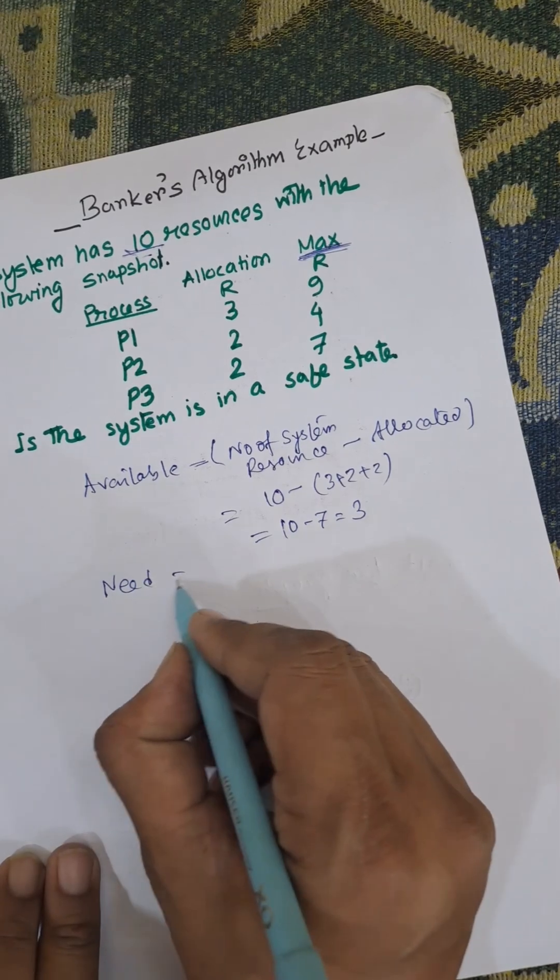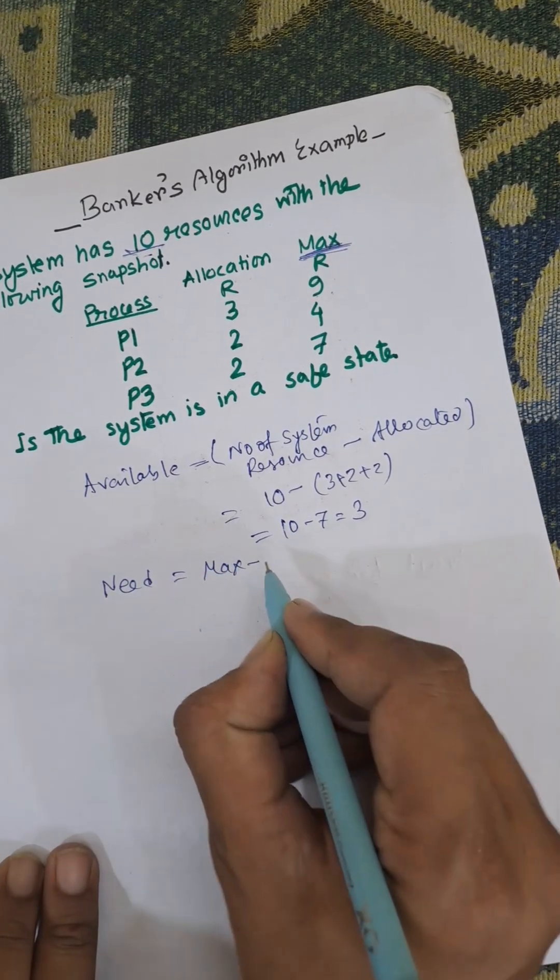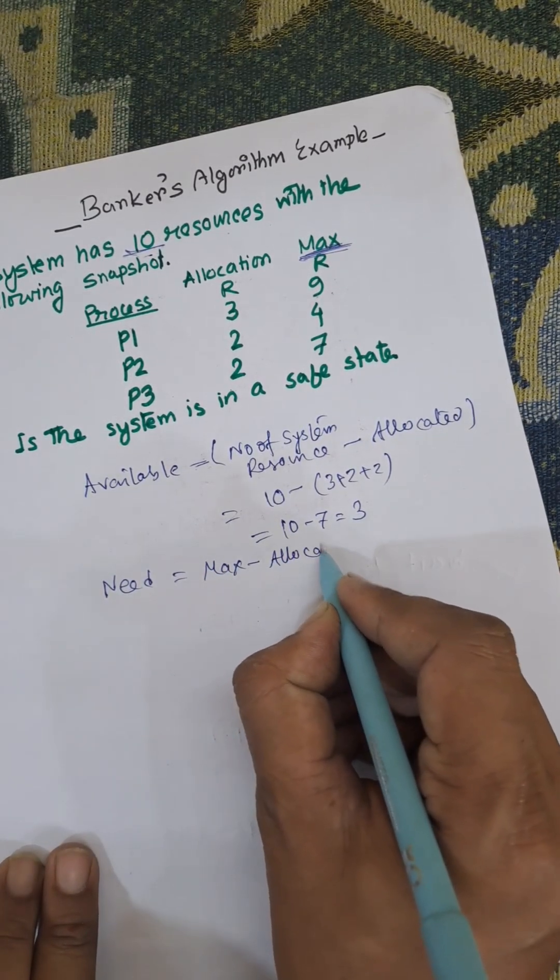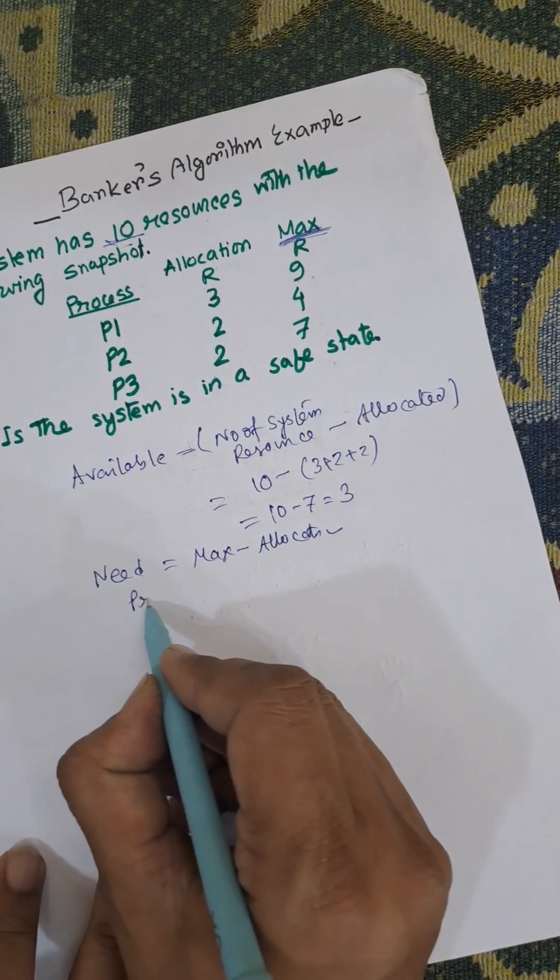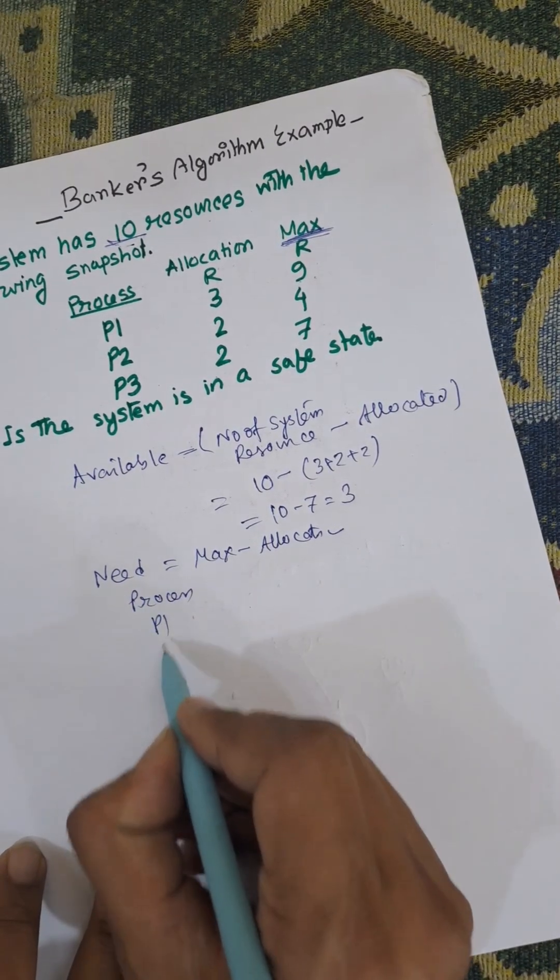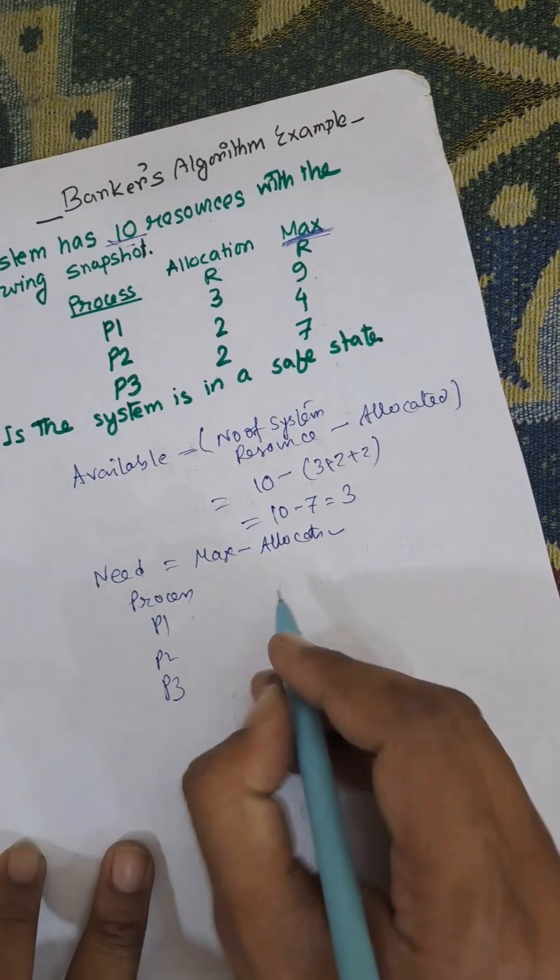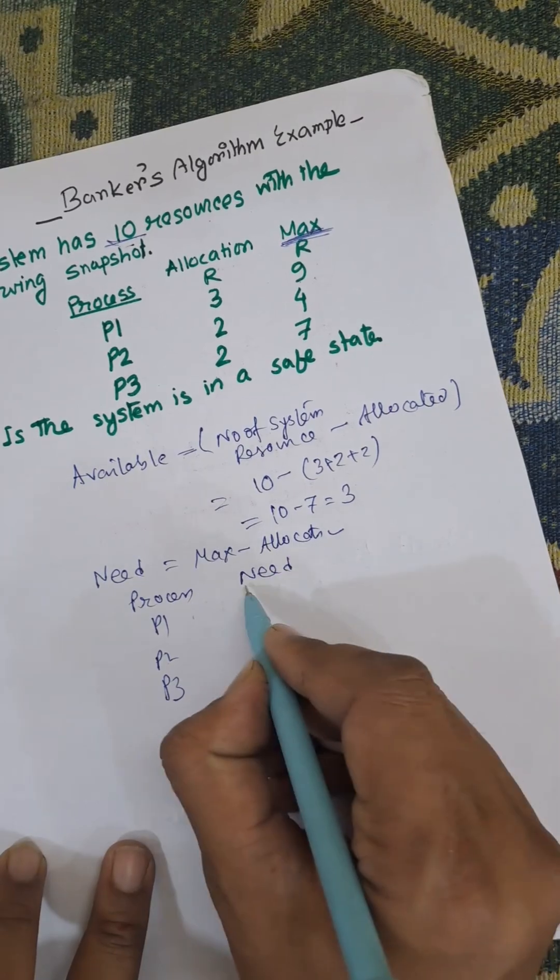Need equals max minus allocation. So need equals max minus allocation, that is equal to process P1, P2, P3. Need means the need are, max means 9 minus 3...